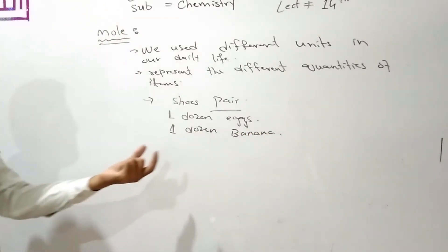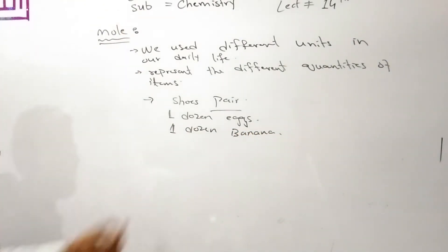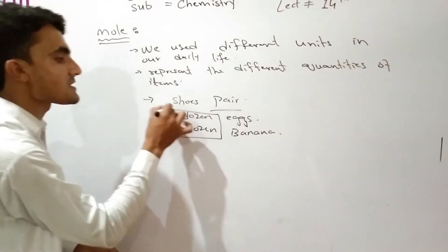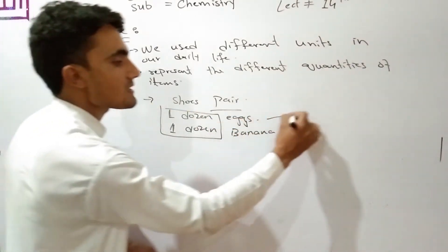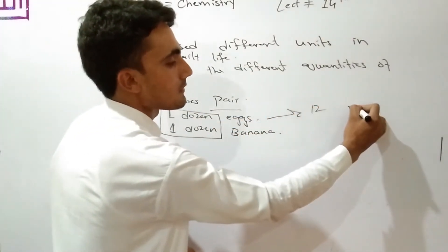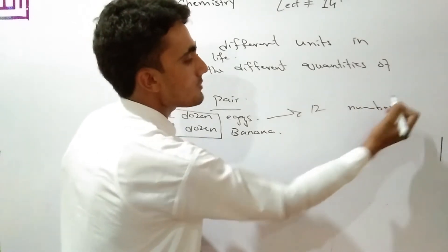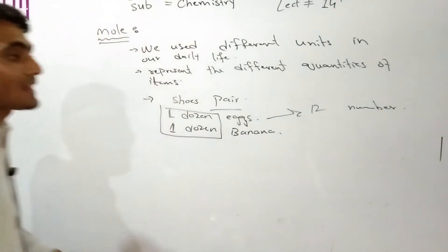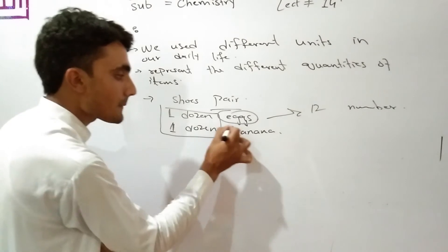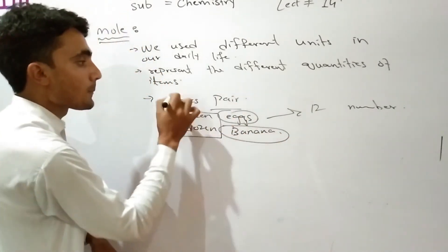For example, one dozen bananas or one dozen eggs — one dozen means twelve numbers. So if we say one dozen eggs, the quantity is twelve. It means that we have twelve eggs, or we have twelve bananas.